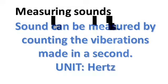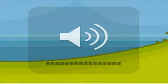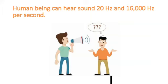Sound can be measured by counting the vibrations made in a second. We measure the vibration with units called hertz. Low sounds are produced when there are fewer vibrations per second. Generally, human beings can hear sounds ranging between 20 hertz and 16,000 hertz per second.